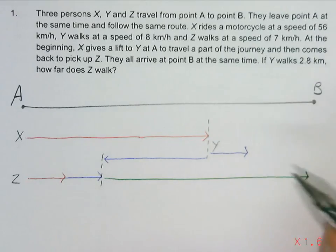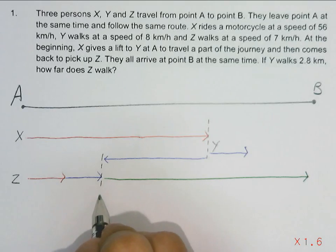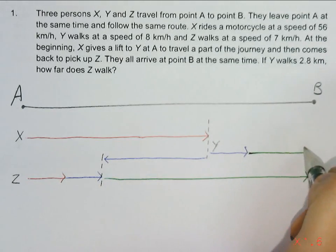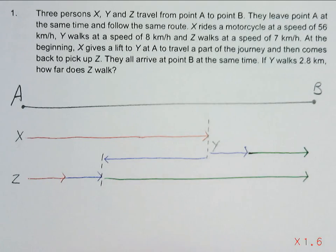So likewise, after X and Z meet, Y will also continue walking towards point B. And they will all end at B.